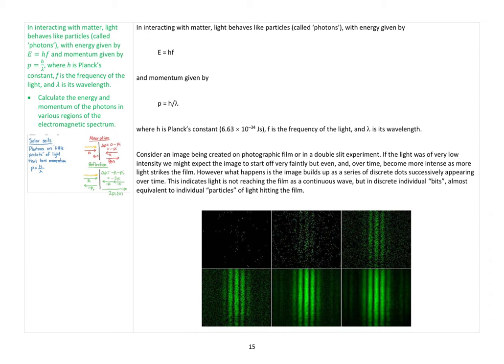What we often see is that in interacting with matter, light behaves like particles called photons, with energy given by E equals HF — where E is the energy, F is the frequency, and H is Planck's constant. Later on you're going to have a go at determining this in a practical. And momentum is given by P equals H divided by lambda, which is the wavelength of light.